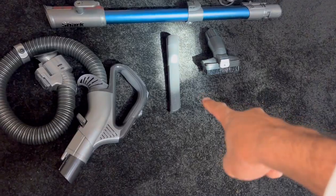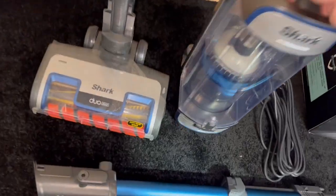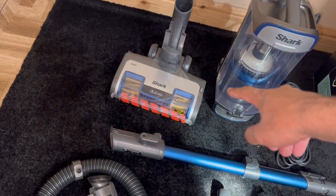So it comes with the hose, the crevice tool, the stair tool with dusting brush, the wand of course, the main unit of course, and the Duo Clean Floor Head.